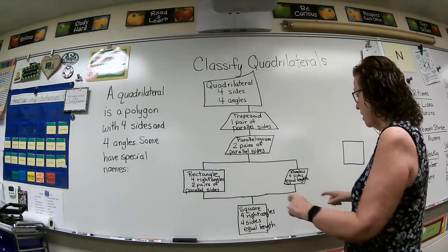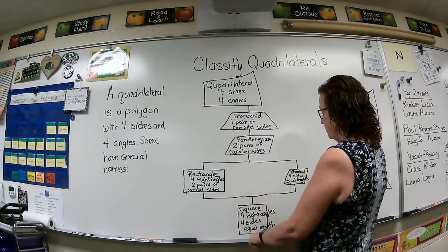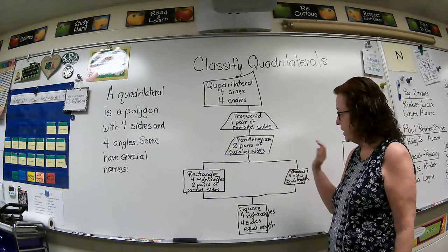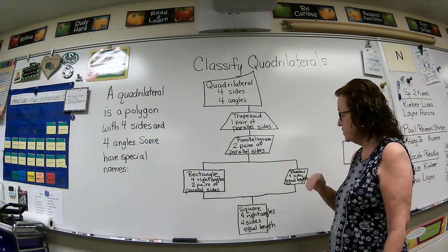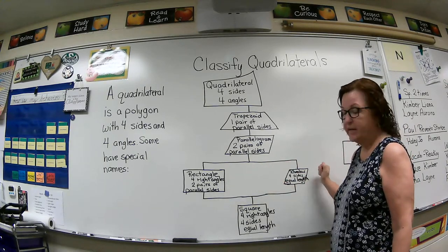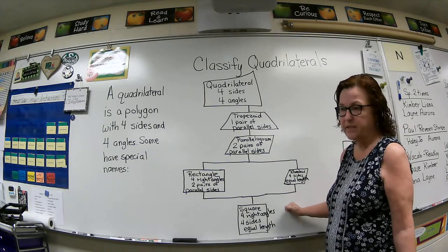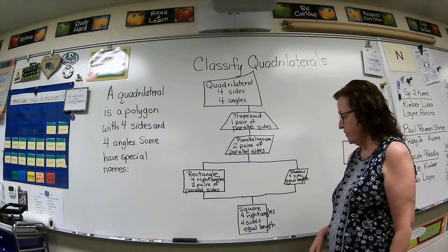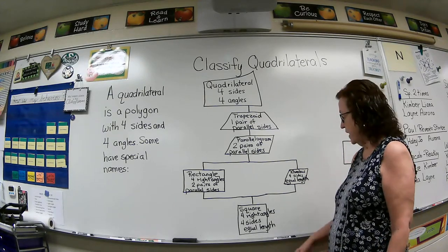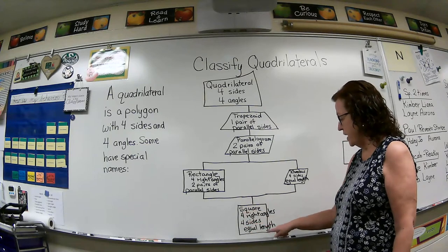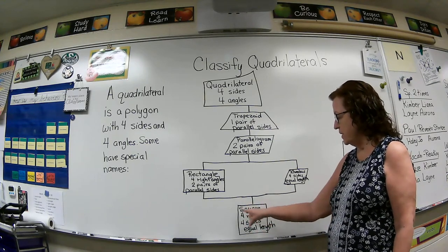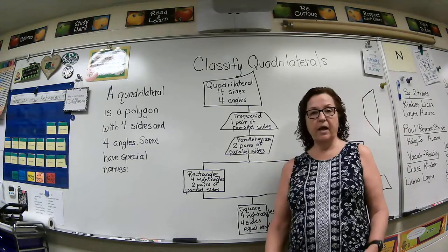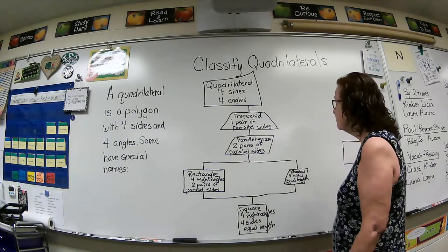Coming down off of both of these is a square. A square can be called a parallelogram, a rectangle, or a rhombus — and of course it can be called a square, which is its most common name. A square has four sides, four angles, and its angles are right angles. Its four sides are of equal length, and it has two pairs of parallel sides with opposite sides parallel.